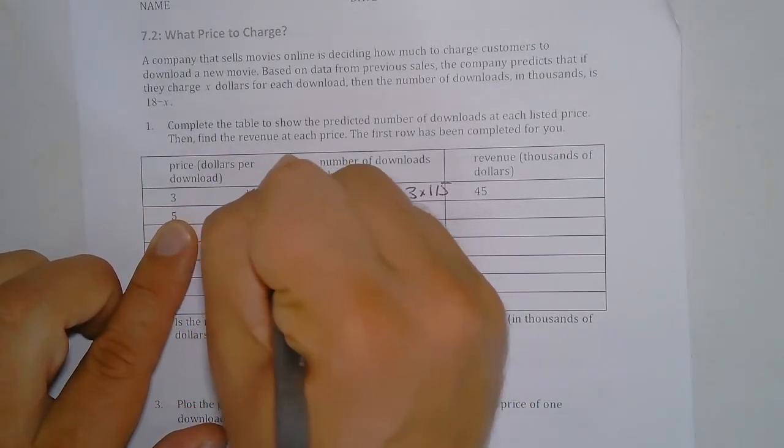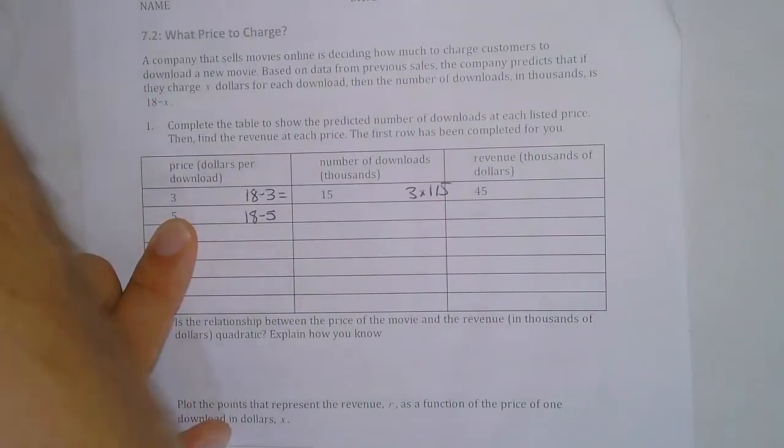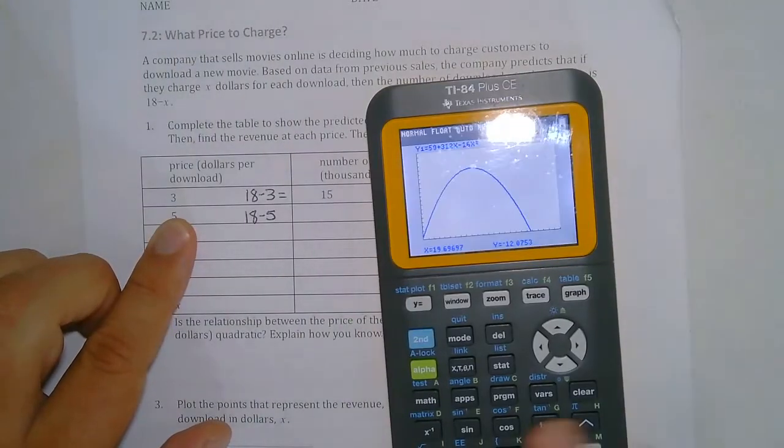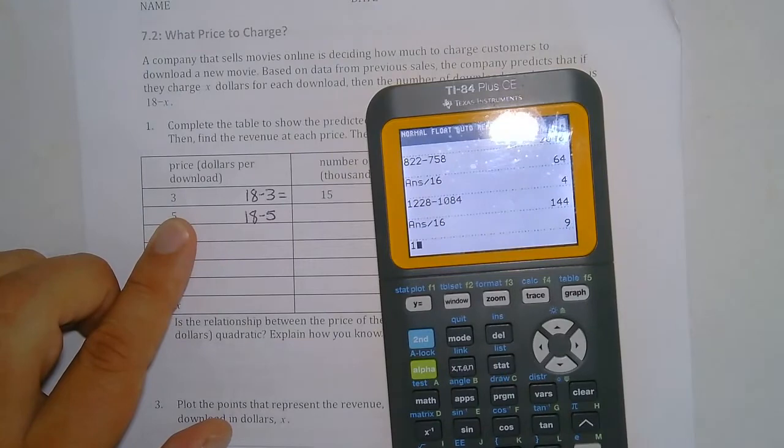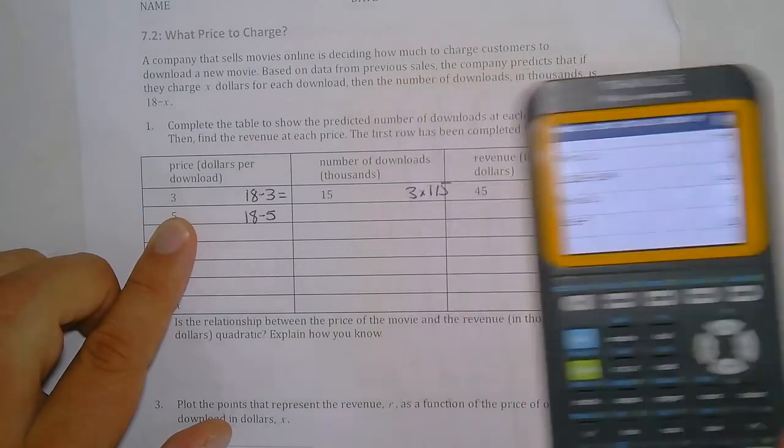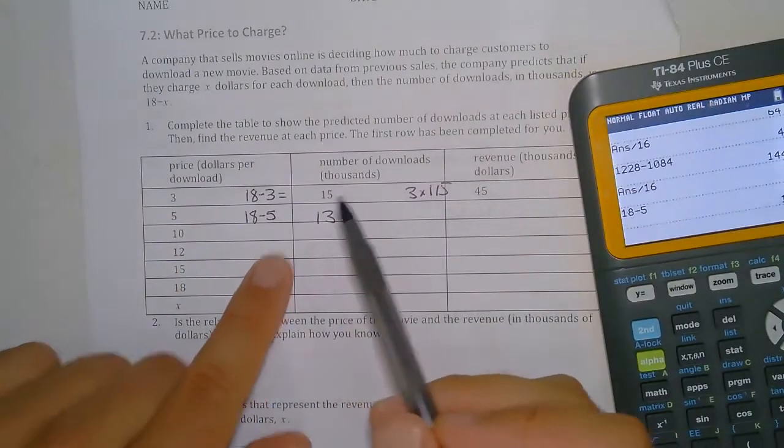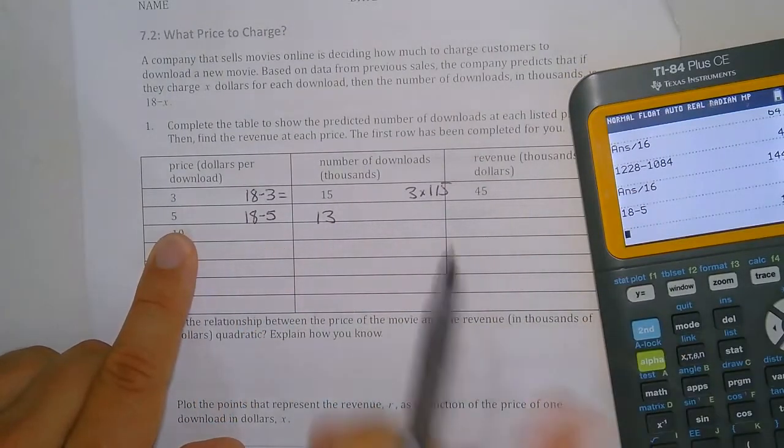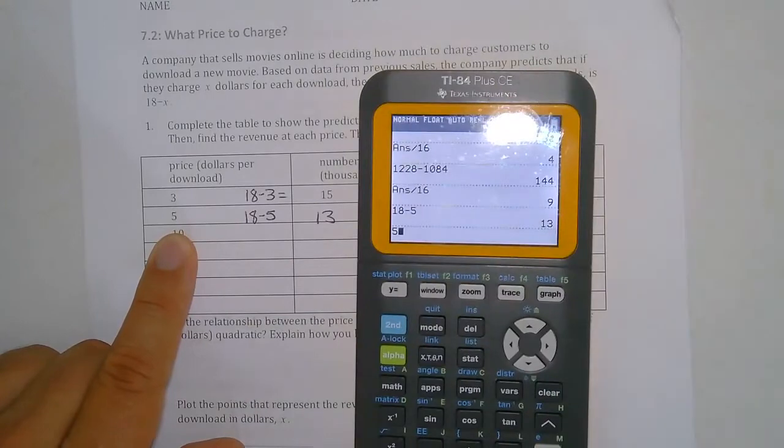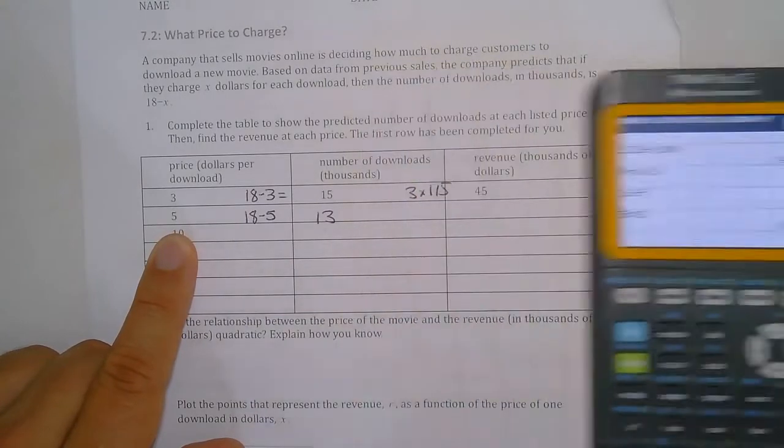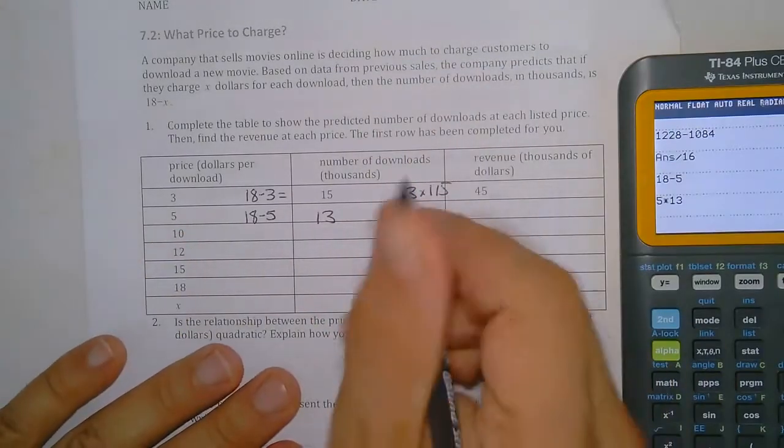Then you can use a calculator here, so 18 minus 5 gives us 13. And then here what we would do is go 5 times the 13 to figure out the revenue, and that gives us 65,000.